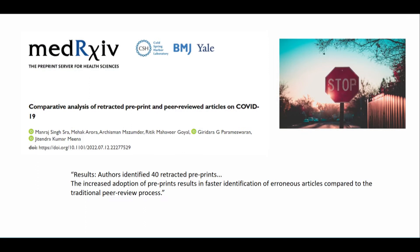There are published papers comparing retracted preprints and peer-reviewed articles on COVID-19. Results revealed that authors identified 40 retracted preprints in one such published paper. The increased adoption of preprints results in faster identification of erroneous articles compared to traditional peer review, which is an advantage of preprints.